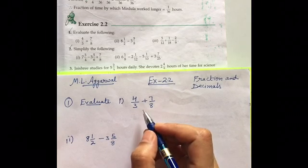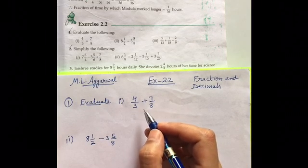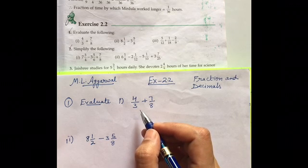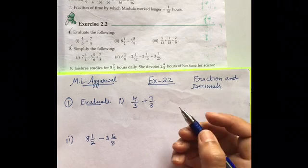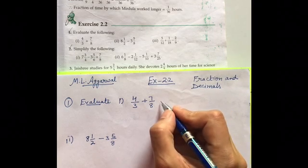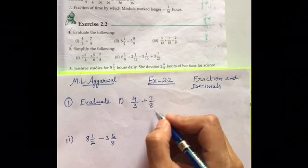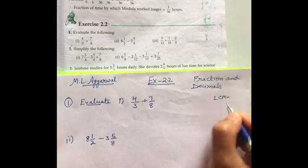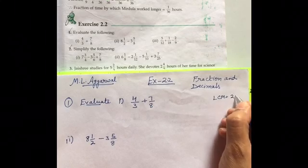It is evaluate. Basically, this exercise is based on the two operations which are plus and minus. Addition and subtraction are the operations. Let's see how we are going to do it. In case of addition or subtraction, the first step is take the LCM. The LCM of these two will be 24.